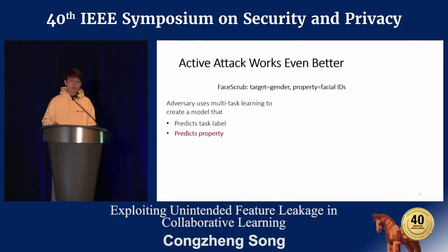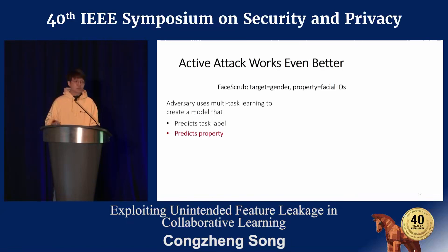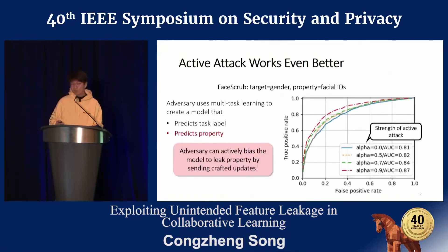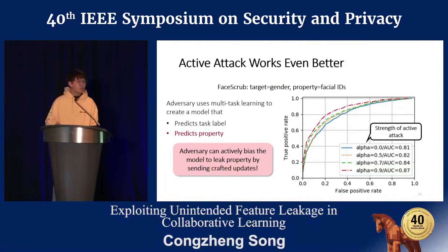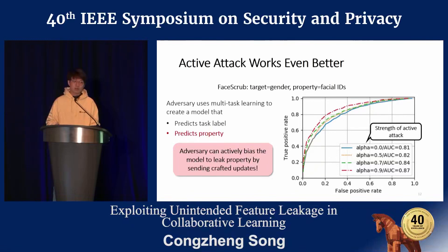Next, I'll show an active version of our attack that can work even better. In the active attack, the adversary creates a model locally using multitask learning — this model predicts both the task label and the property. The updates computed from this model contain information that can actively influence the global model to leak the properties. The ROC curve for predicting facial IDs in the FaceGrub dataset shows that for larger alpha values — the strength of the active attack — we get better AUC scores. This demonstrates that an adversary can actively bias the global model to leak properties by sending crafted updates using multitask learning.